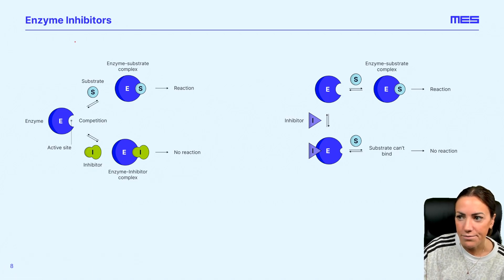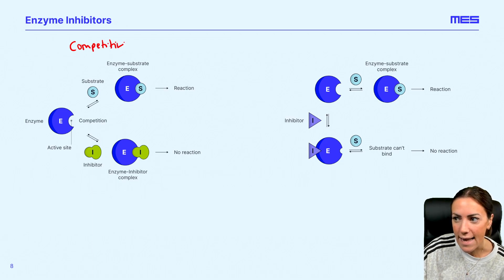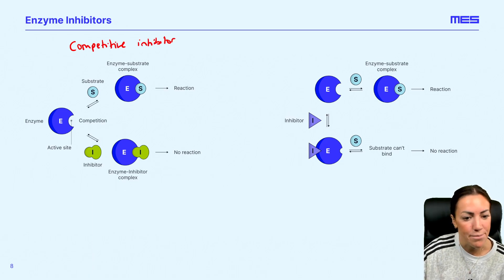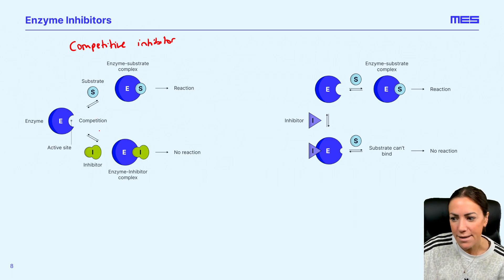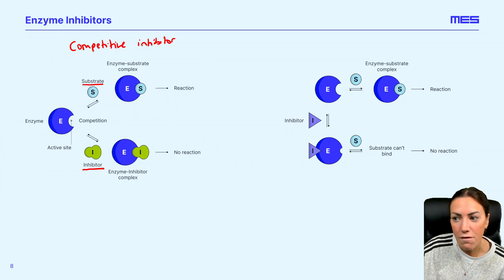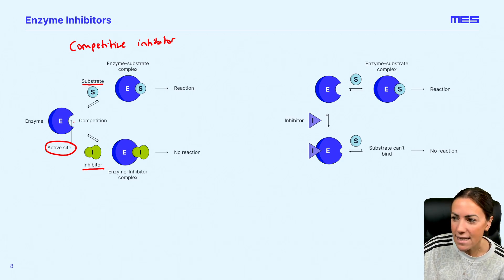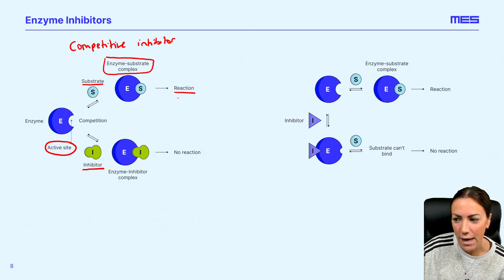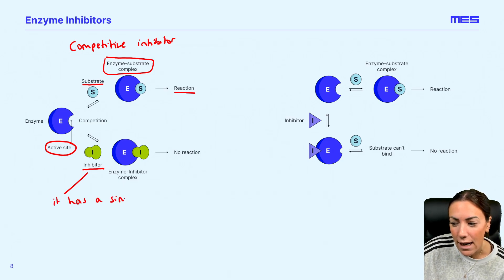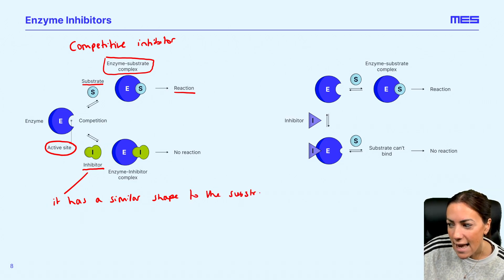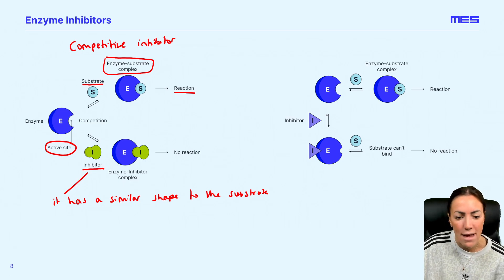This diagram here shows what we call a competitive inhibitor. We can see the inhibitor and the substrate. The substrate is complementary to the enzyme's active site and binds to that active site, forming what we call an enzyme substrate complex — that's when the reaction takes place. The inhibitor has a similar shape to the substrate. We're not going to say it has the same shape because that would be incorrect.